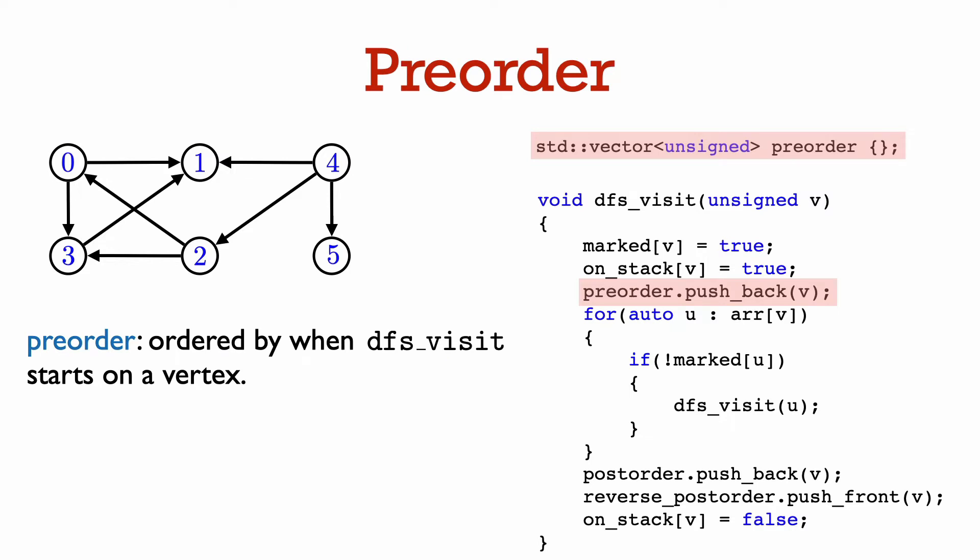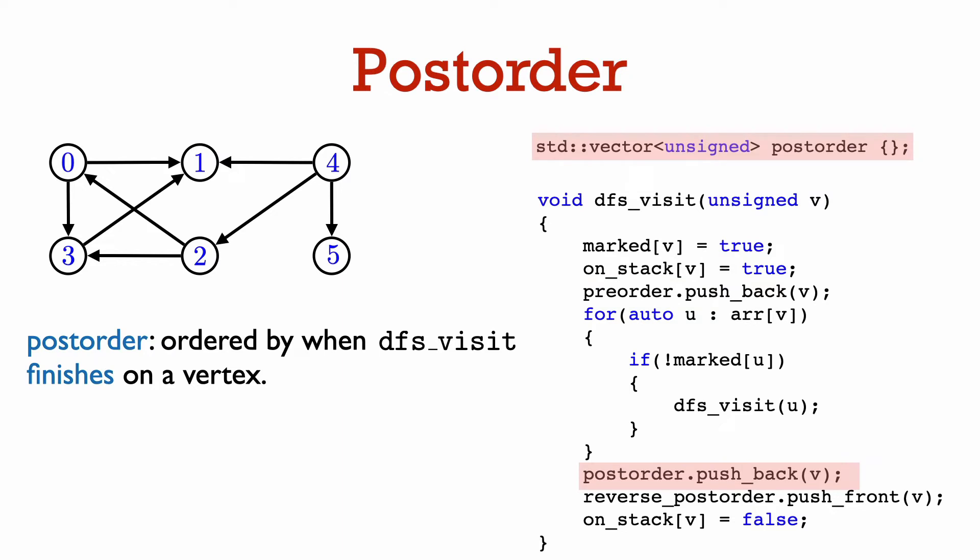The first ordering we can consider is called preorder — an ordering of the vertices by the time we start DFS visit on them. To store this, we have a vector called preorder, and right when we start DFS visit on a vertex, we push that vertex to the vector. At the end of depth-first search, preorder holds the vertices in the order we visited them. The second ordering is called postorder — an ordering of the vertices by the time we finish DFS visit on them. We have a vector called postorder, and when DFS visit is about to terminate on a vertex, we push it to the vector. At the end, postorder holds the vertices in the order we finished visiting them.